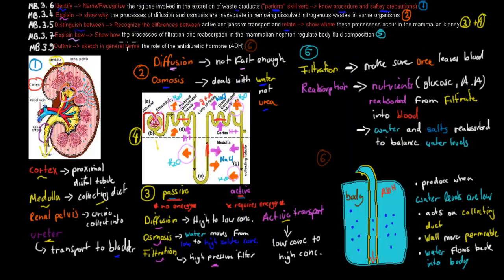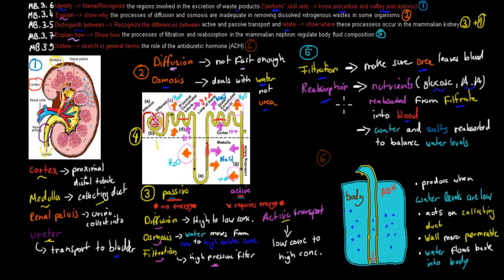The next dot point says 'explain how' — show how filtration and reabsorption in the kidney or nephron regulate body fluid composition. Filtration at high pressure squeezes out urea from blood, filtering it into the nephron. Reabsorption ensures that glucose and amino acids — filtered in by mistake — are reabsorbed back into the body from the filtrate, along with water and salt to balance water levels. Both mechanisms allow us to balance water and salt levels and remove urea.